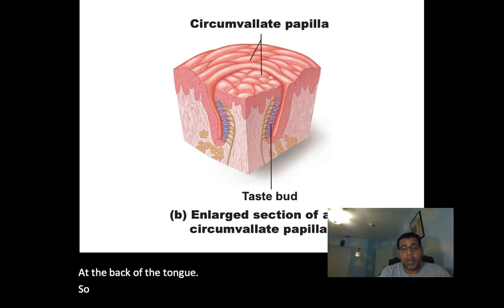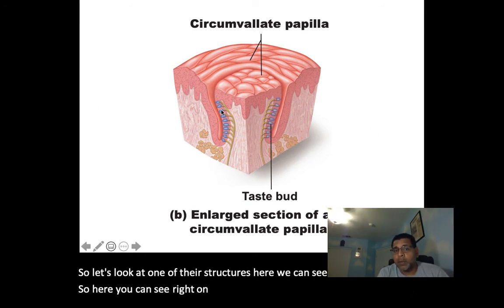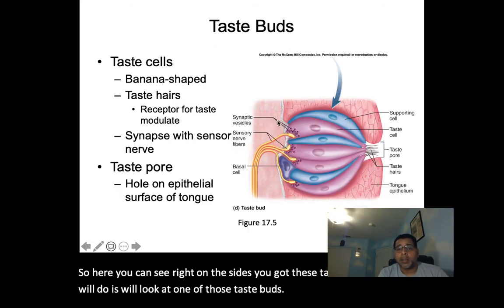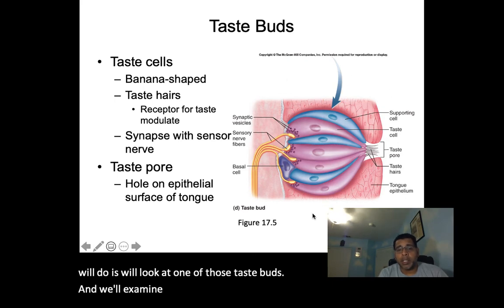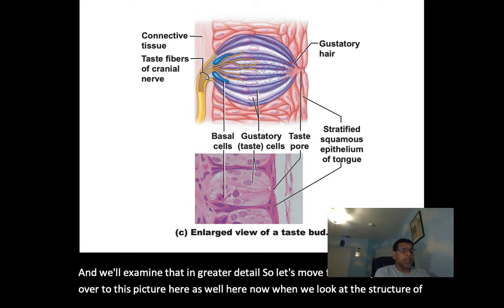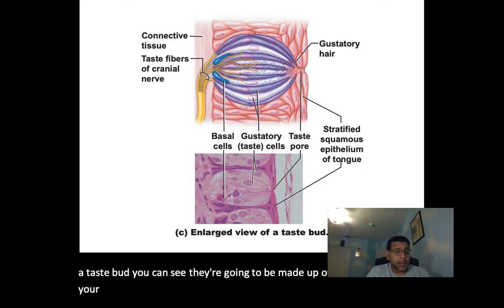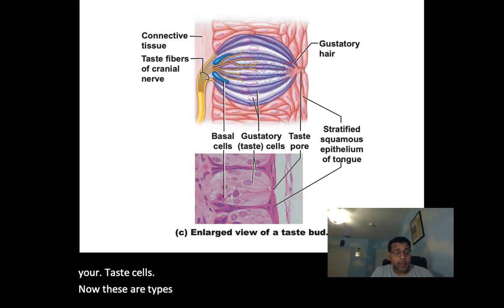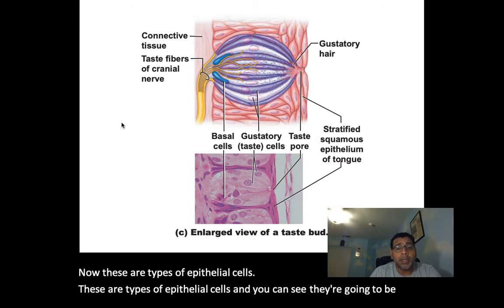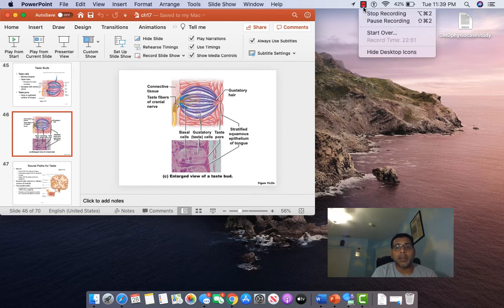Looking at the structure of a circumvallate papilla, you can see taste buds on the sides. When we look at the structure of a taste bud, they're made up of gustatory cells — taste cells — which are types of epithelial cells making up the majority of these taste buds.